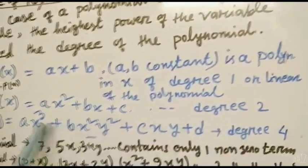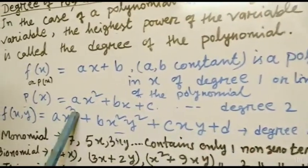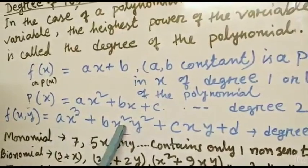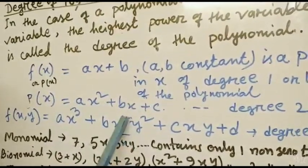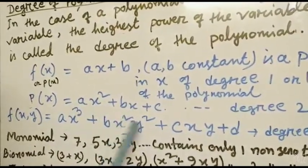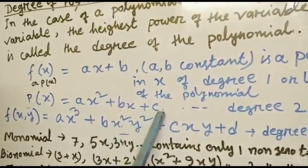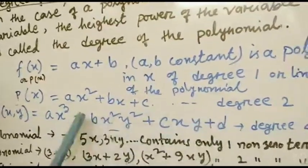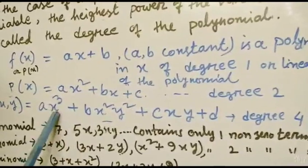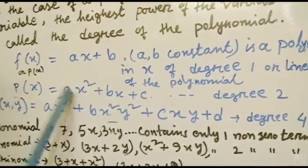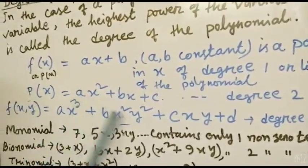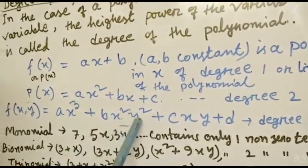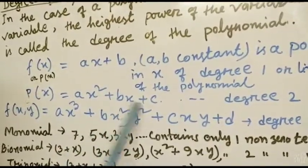For a polynomial with two variables x and y — for example, a term with x² and y² — the degree is found by adding the powers: 2 plus 2 equals 4. So it will be degree 4, because x and y are both variables and the sum of their powers gives the degree of that term.